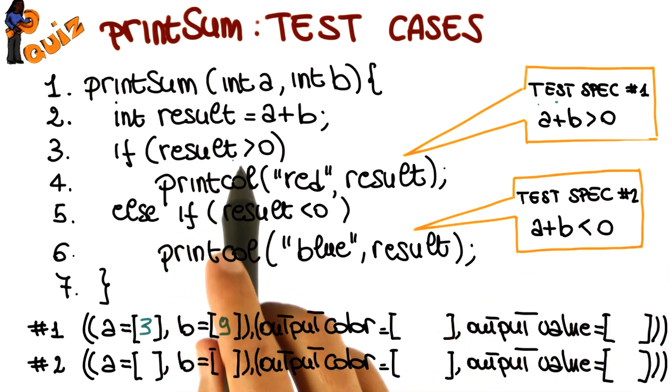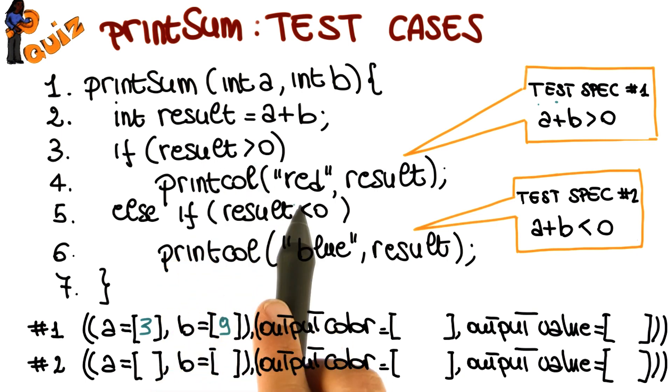And in terms of results, what we expect to see is, in the case of a result greater than 0, the color should be red and the output value should be 12.